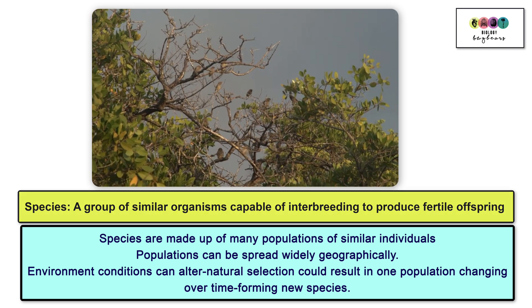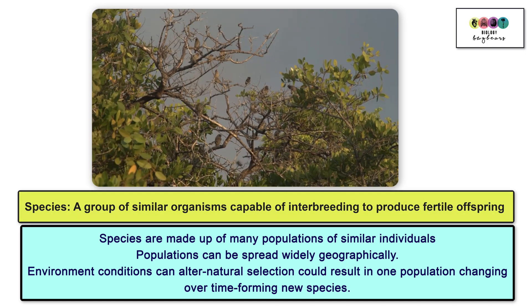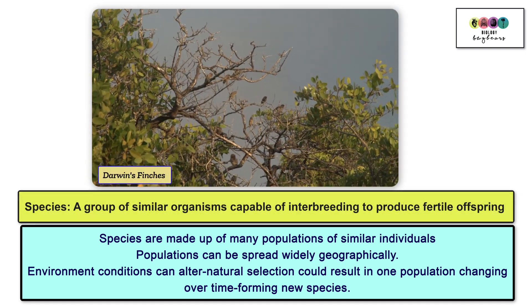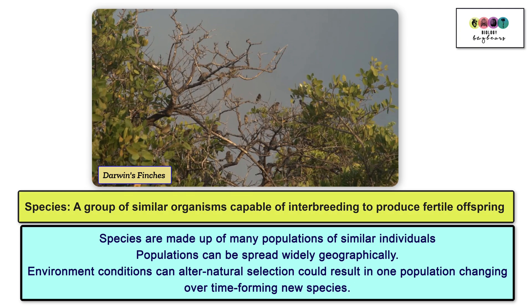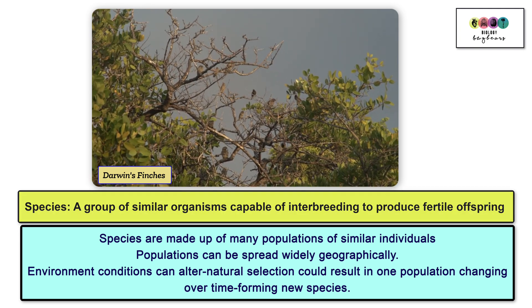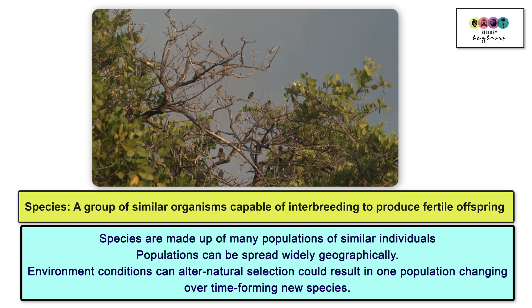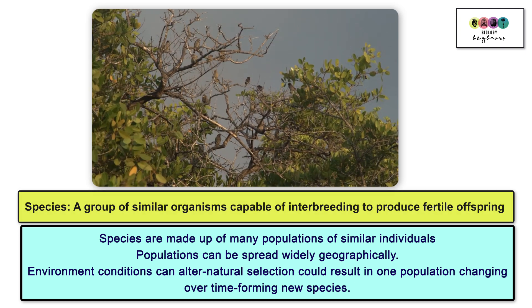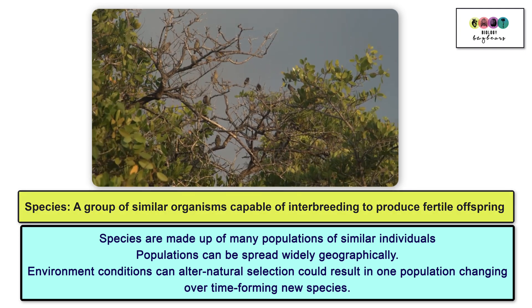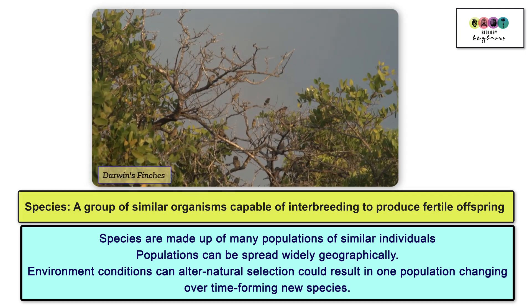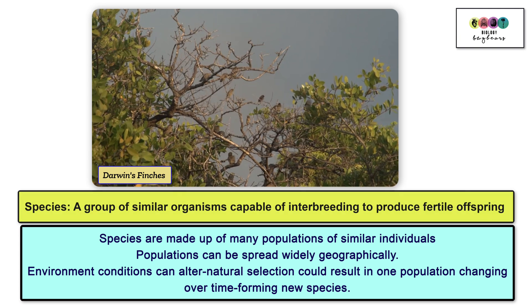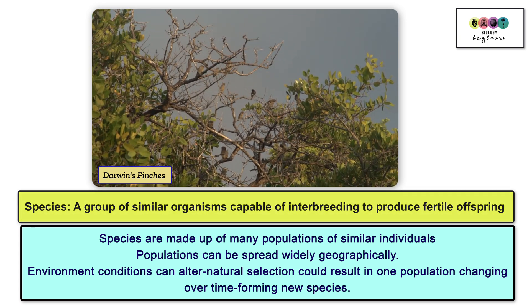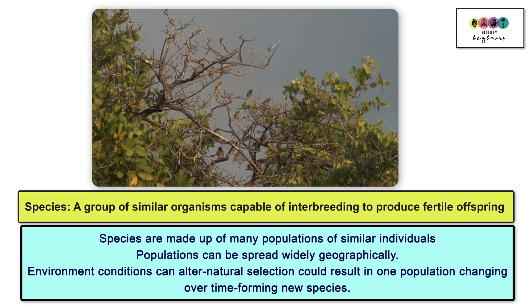Species are made up of many populations of similar individuals, and these populations can be spread out over huge geographic areas. Sometimes environmental conditions can alter in one area, and natural selection could result in one population changing over time, forming a new species. If they ever met up with the other populations, they can't interbreed — that's why they have formed a new species.